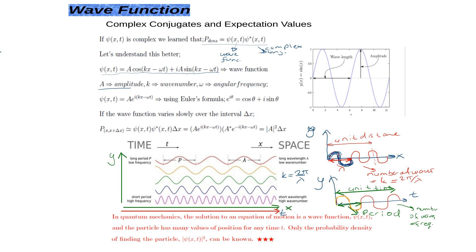Probability density and probability are summarized here. We can do a calculation for this form of wave function: wave function times its complex conjugate times the distance if the wave function is varying slowly, or we integrate. If we do the complex conjugate multiplication, we get A² from here.